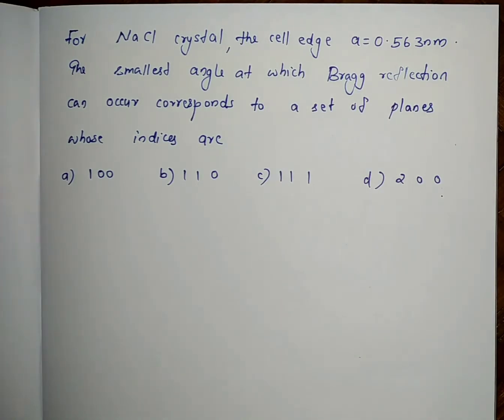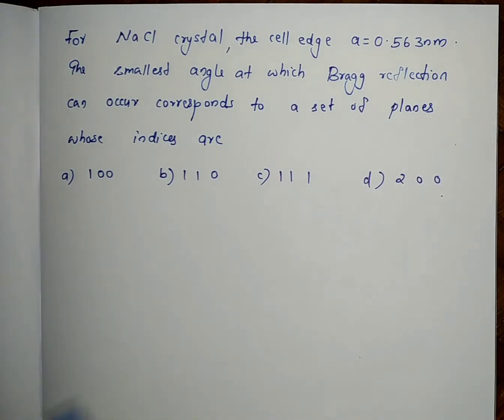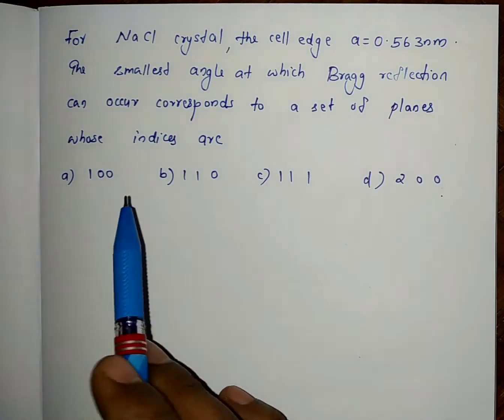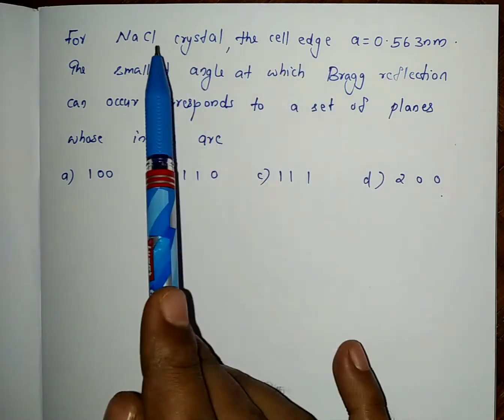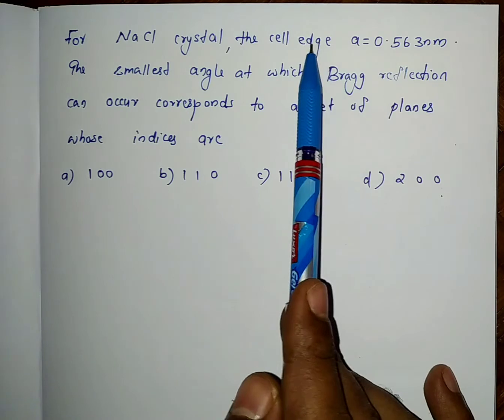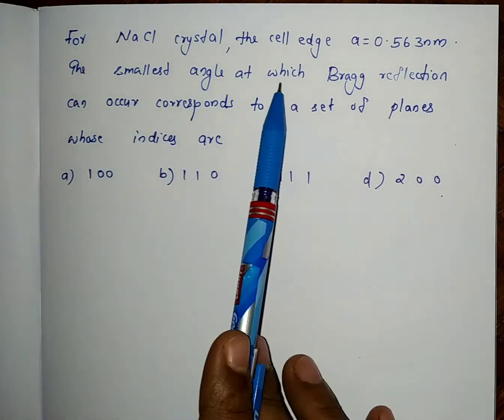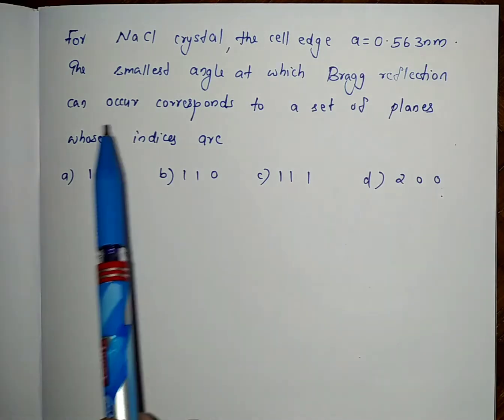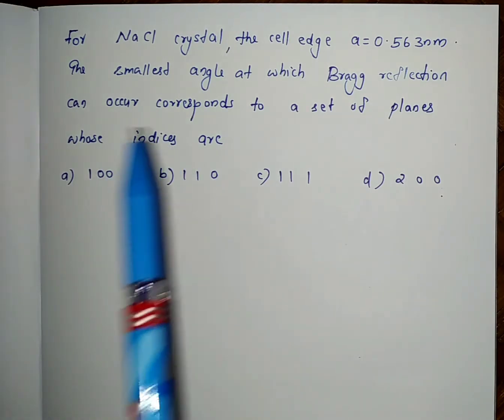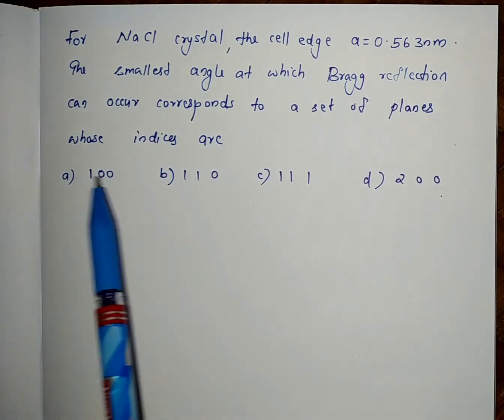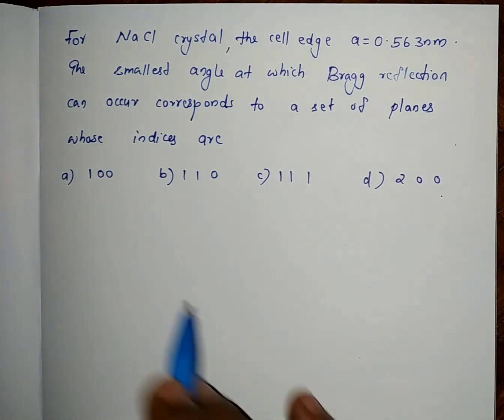This is a solid state physics question. Bragg reflection, scattering, diffraction. NaCl is a crystal lattice with a equals 0.563 nanometer. The question is: what is the smallest angle at which Bragg reflection can occur, corresponding to these Miller indices? Now let's get the answer.